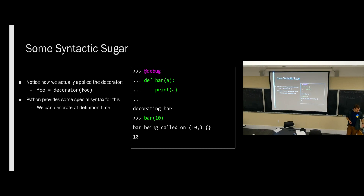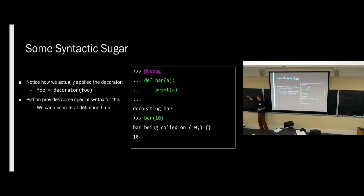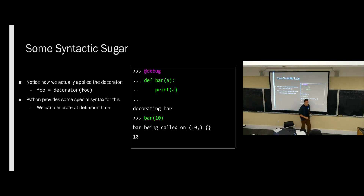That syntax takes in a function implicitly. But you can pass other arguments to a decorator like that — I'll get to that in a couple slides. This should look a little weird, because here we're just putting a function name, and debug gets called on whatever we put after it. But when there are parentheses, this is a function call being used as a decorator. There's a whole slide on that.